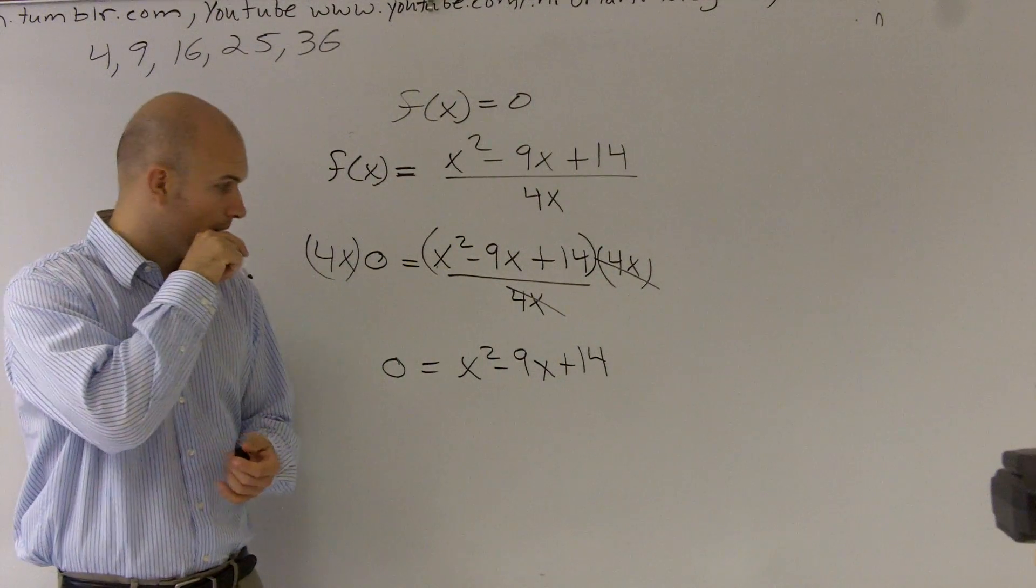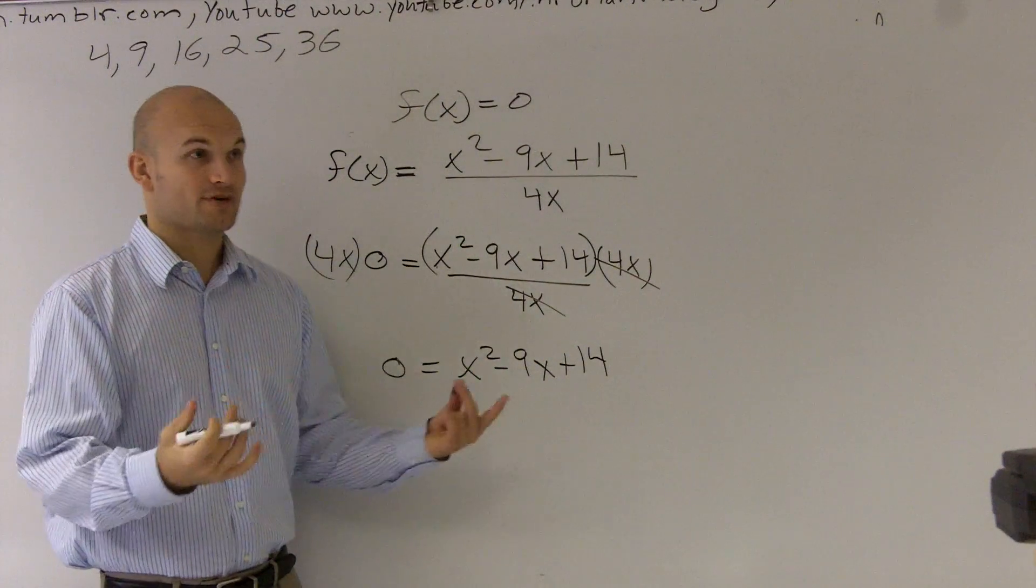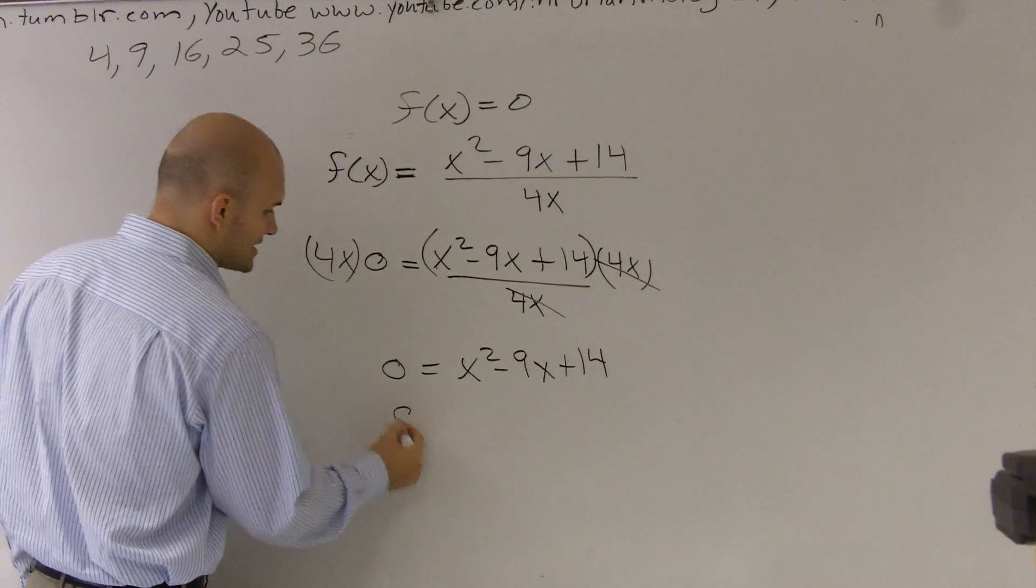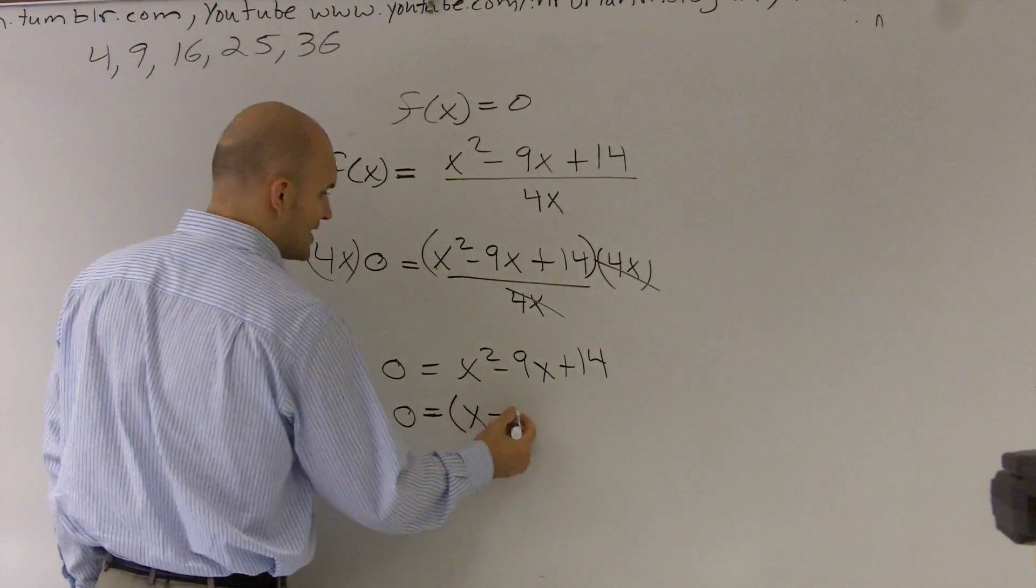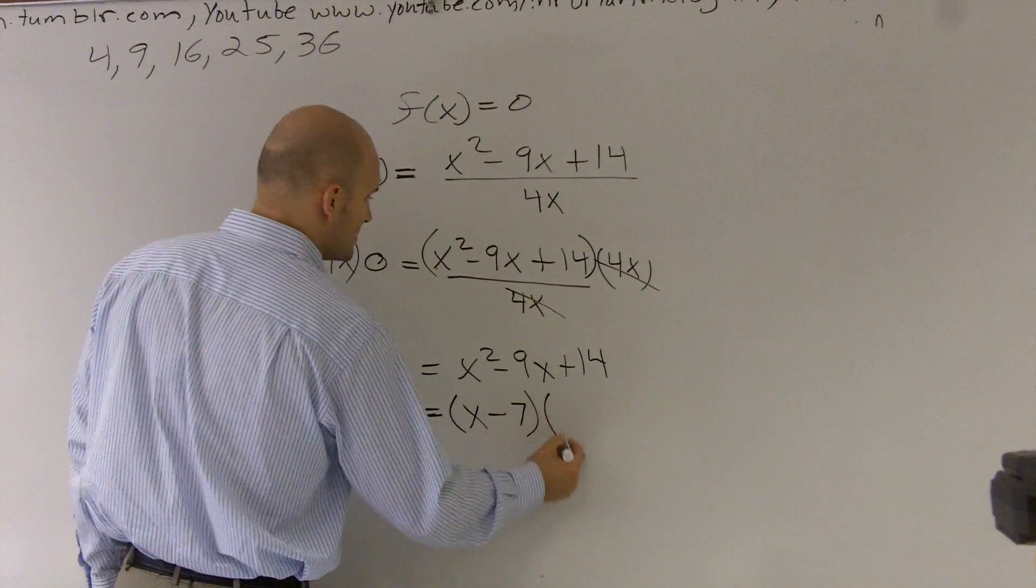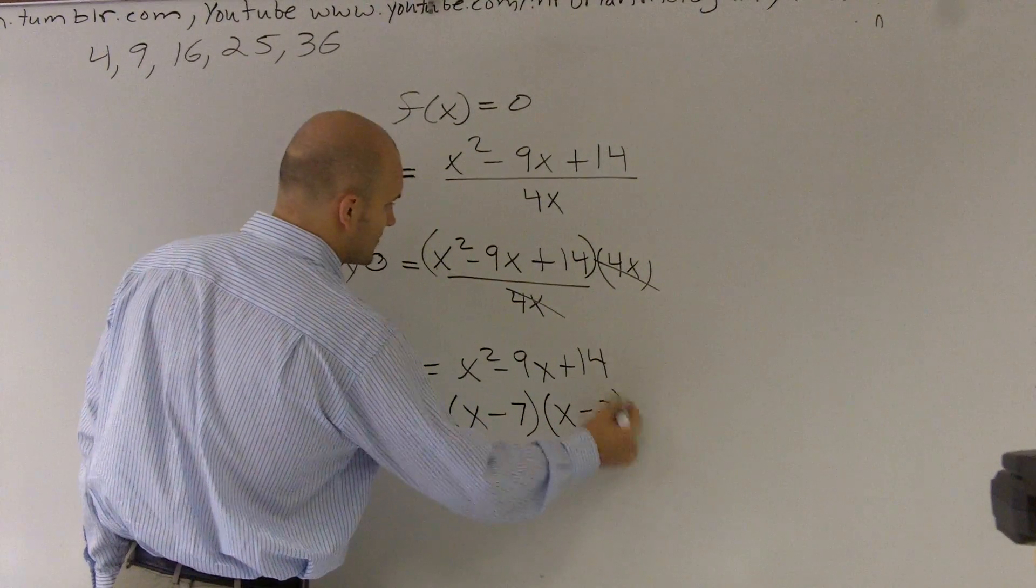Negative 7 and negative 2. So I'm going to look to factoring it as a set of linear factors. So I say 0 equals, and if you look at your factoring, you can factor in the two binomials of x minus 7 times x minus 2. Very good.